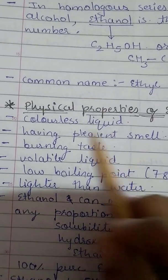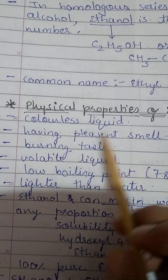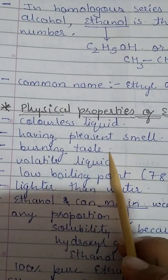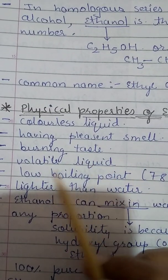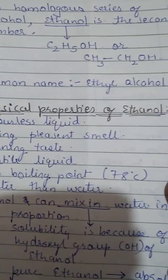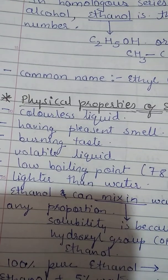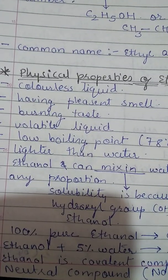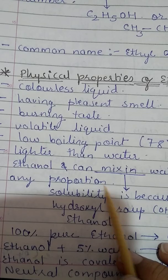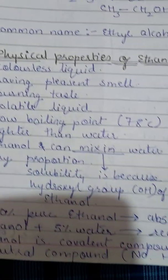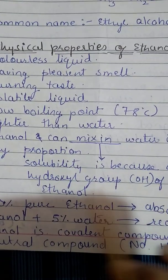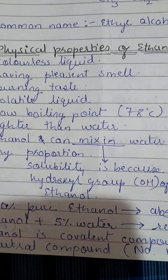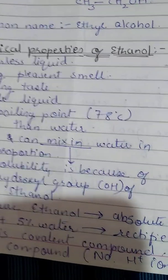The physical properties of ethanol: it is a colorless liquid, it has a pleasant smell, it has a burning taste, it is a volatile liquid with a low boiling point of 78 degrees Celsius, and it is lighter than water. Ethanol can mix with water in any proportion.